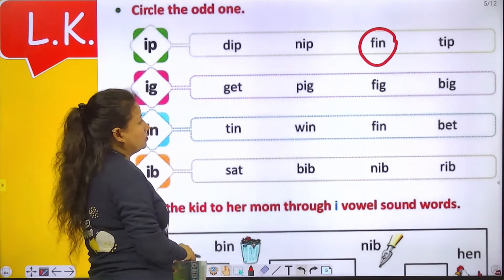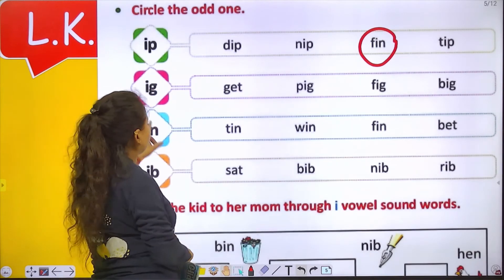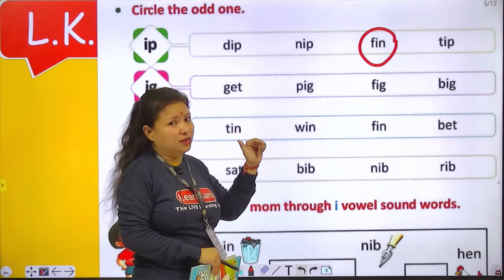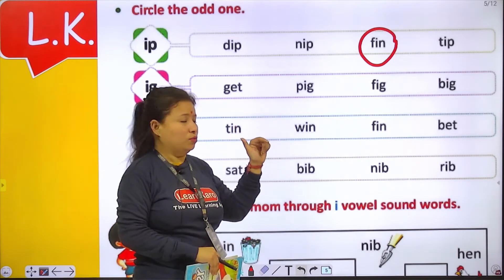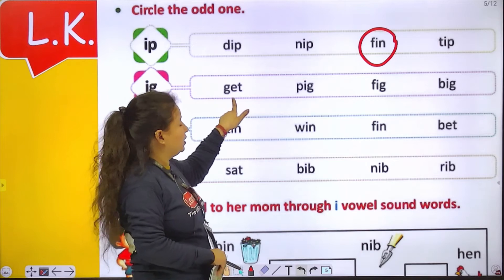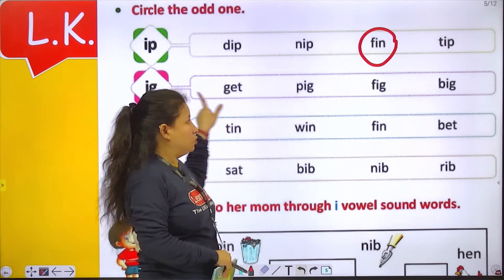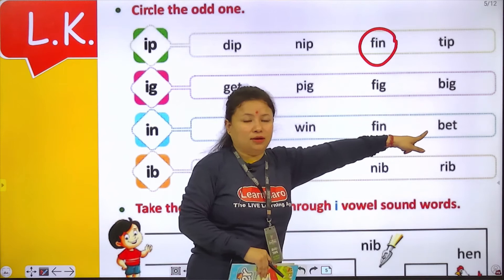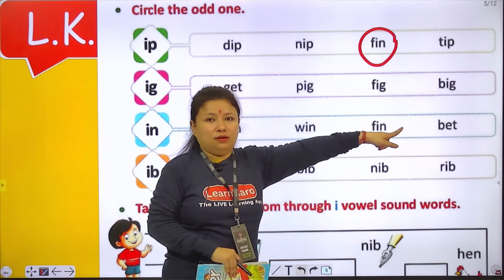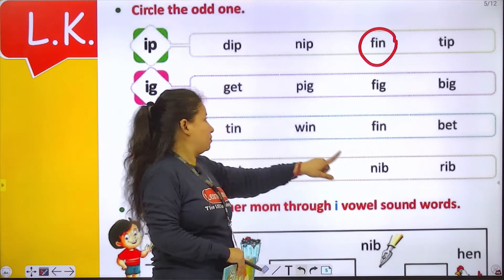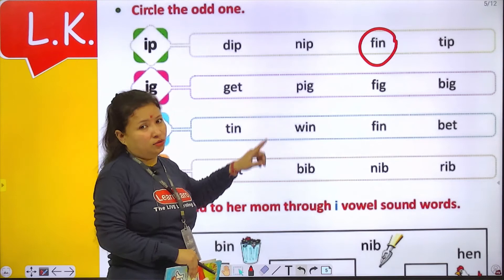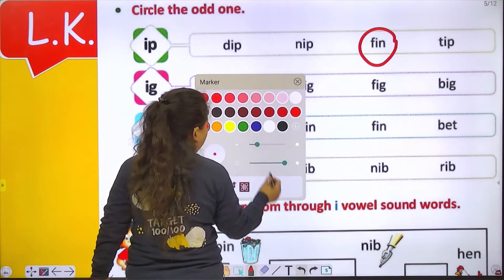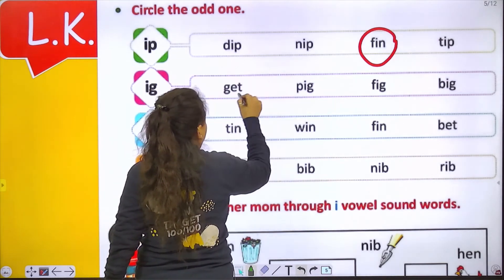IG. Get. Ig and get — no, they don't match. Ig, pig, fig, big — same sound. But get — no, it is different. To hume get ko circle karna hai.